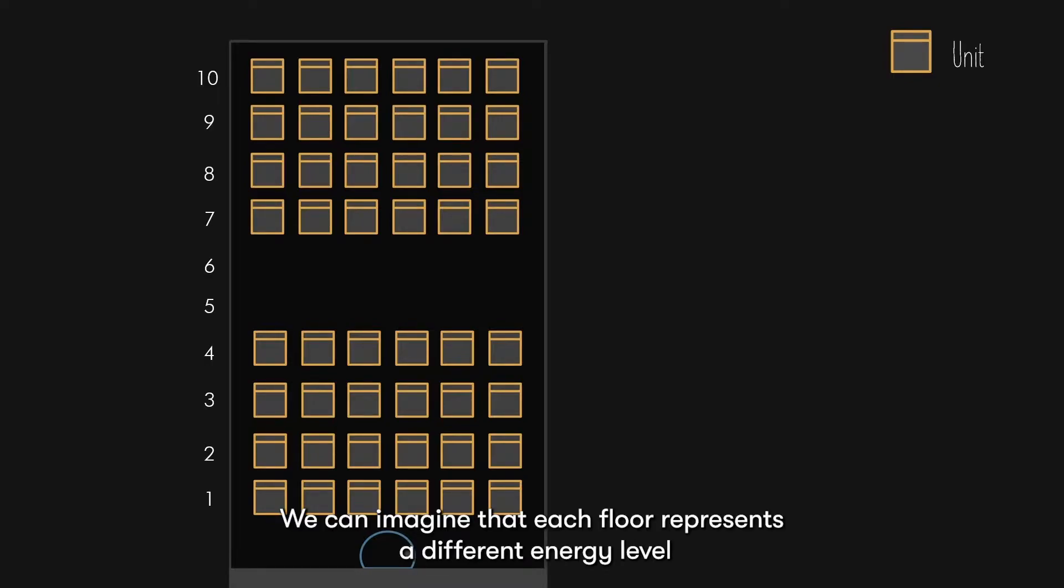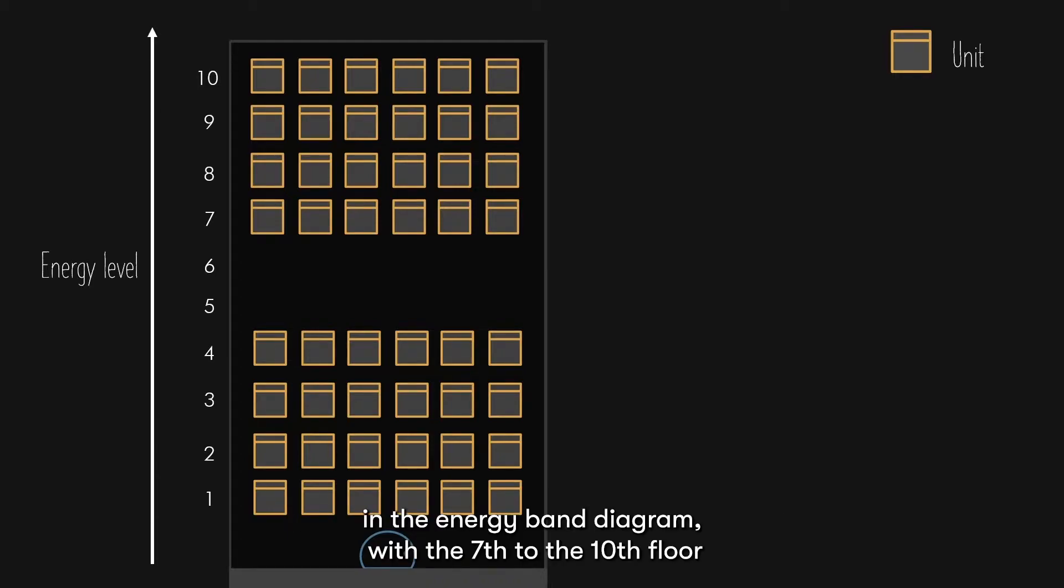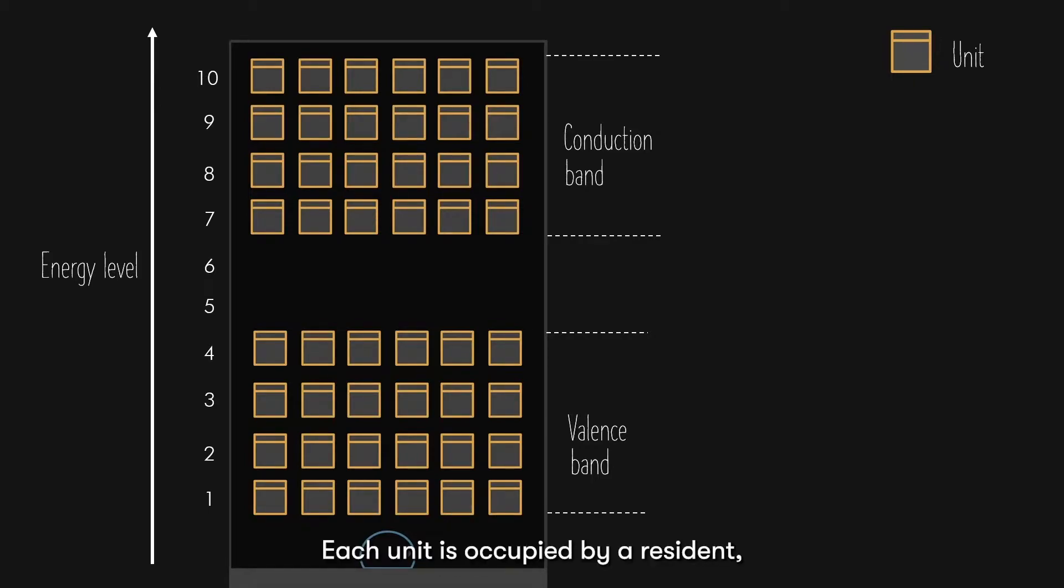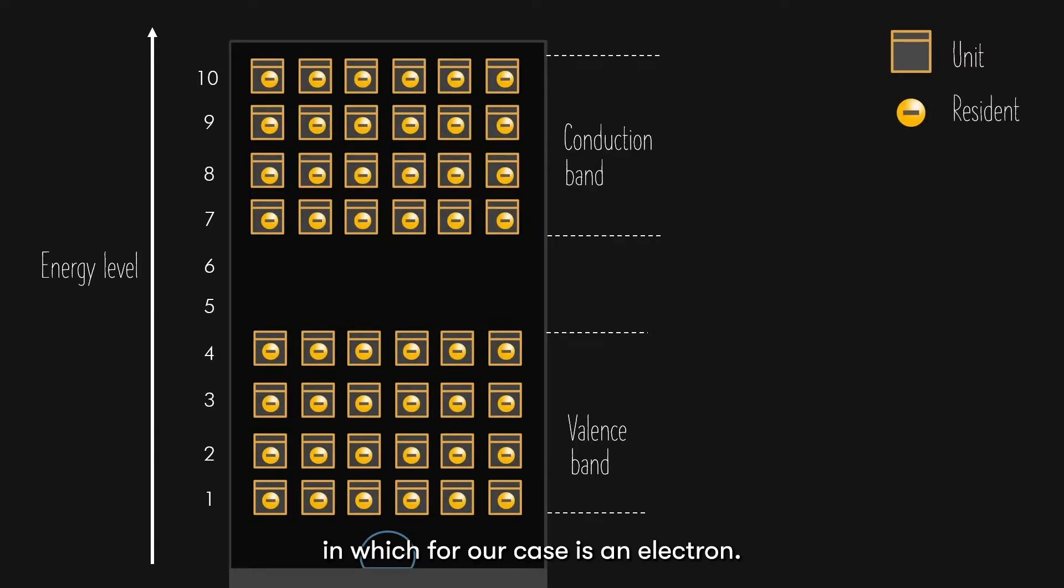We can imagine that each floor represents a different energy level in the energy band diagram, with the 7th to the 10th floor representing the energy levels in the conduction band, and the 1st to 4th floor representing the energy levels in the valence band. Each unit is occupied by a resident, in which for our case is an electron.